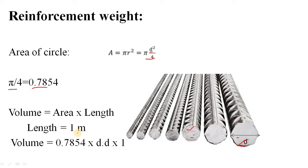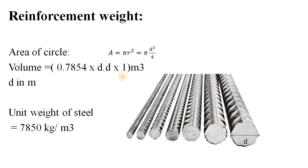Next, find the volume of the reinforcement for unit length. Unit length means 1 meter. The reinforcement bar is like a cylinder, so volume equals cross-sectional area multiplied by its length. In our case, length is 1 meter, and the cross-sectional area is 0.7854 × d². Since length is in meters, the diameter must also be in meters, not millimeters. I will explain how to convert millimeter diameter to meter diameter.